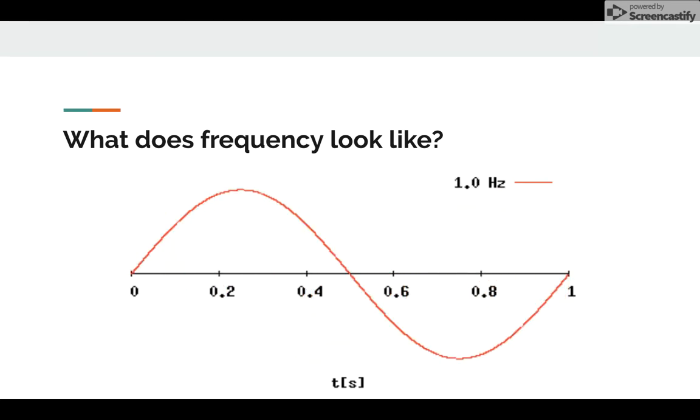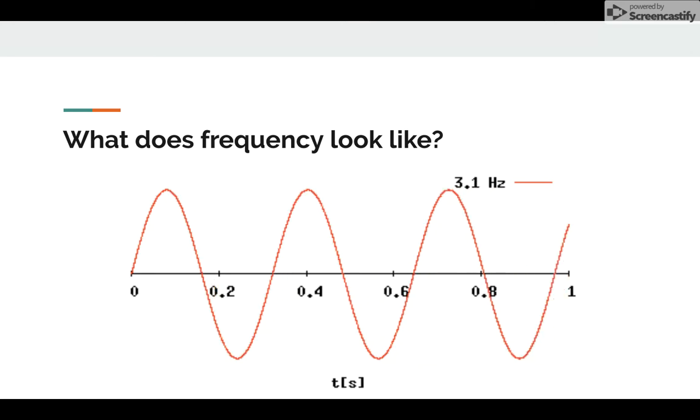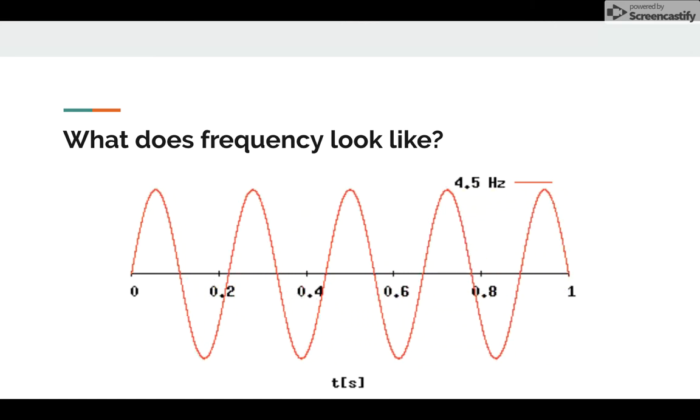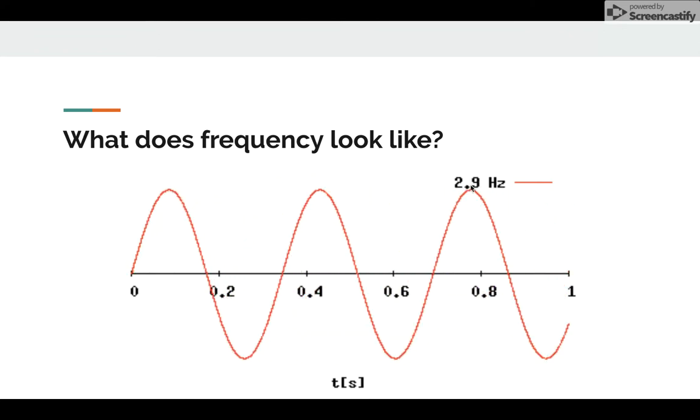With light waves, they're always traveling at the same speed. You guessed it, 300 million meters per second. So as the wavelength gets smaller and smaller, the frequency has to get bigger and bigger.